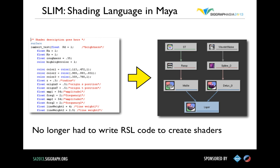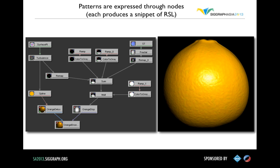Node graphs really tend to be the way that technical artists at Pixar like to work, so we made a shift from coding shaders to node graphs. We no longer have to write RSL by hand — this also allows us to package good bits of RSL into nodes. Patterns are expressed through nodes, each making a little snippet of RSL, and these patterns combined can create something like an orange — that's the node network I use as the first lesson of my RenderMan class.